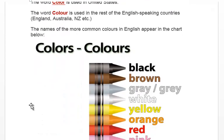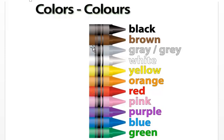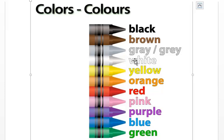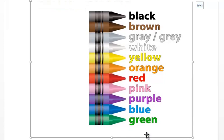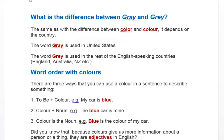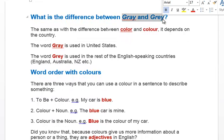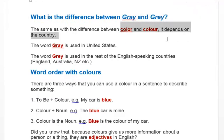Here we have some of the main colours: black, brown, grey (American) or grey (British), white, yellow, orange, red, pink, purple, blue, and green. The difference between gray and grey is simply British and American, the same as colour and color.